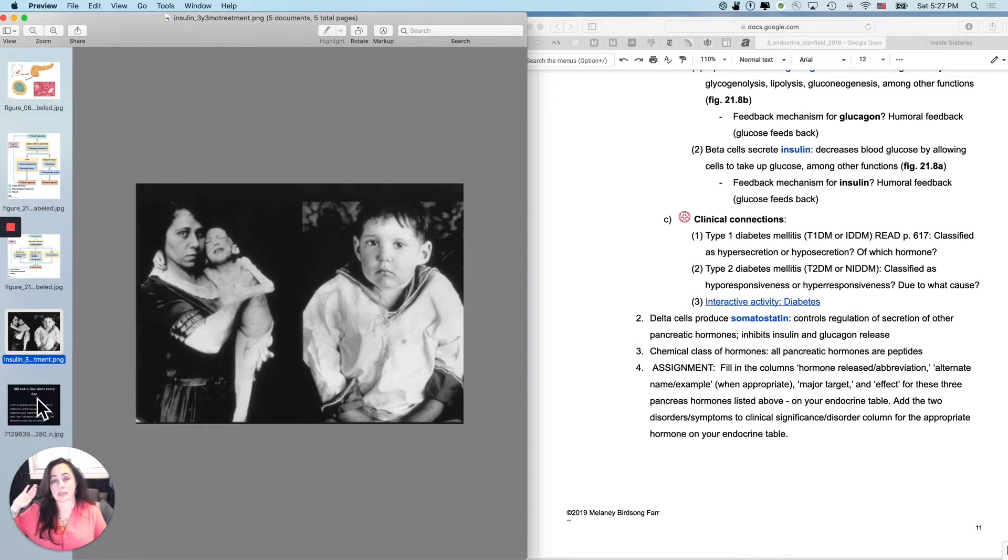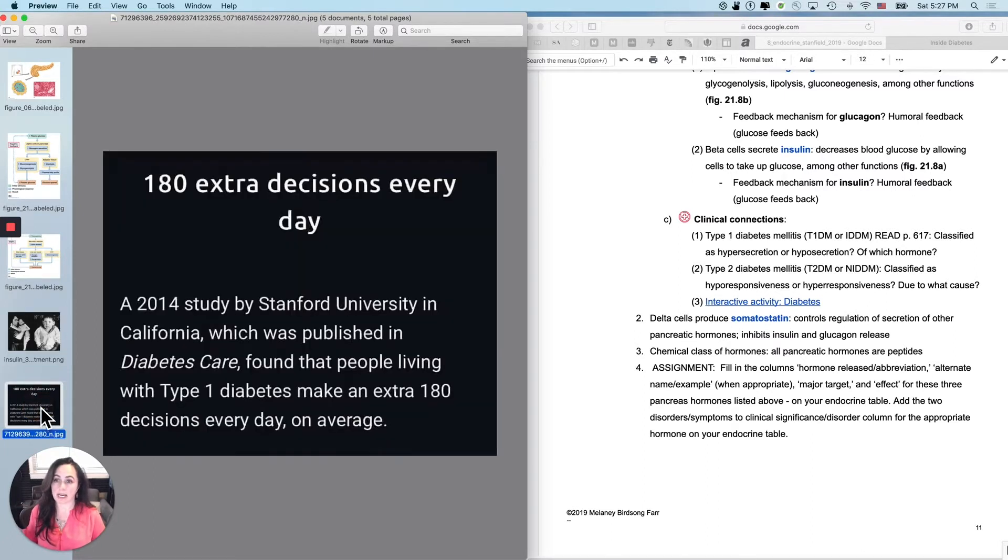Type 1 diabetes mellitus is going to require an entire change about the way that a person thinks about the nutrients that they take in, the behaviors that they do, and also the decisions that they need to make over the course of a day. There was a 2014 study at Stanford that said that a person with type 1 diabetes makes up to 180 extra decisions every single day. Just that sheer deluge of mental requirement can also be exhausting.